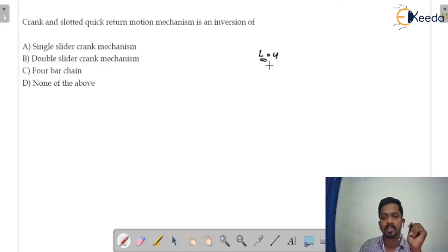In the single slider crank mechanism, one link is sliding pair and out of four there are three turning pairs. That is basically crank and slotted lever mechanism. That is basically the inversion of the single slider crank mechanism. So option A would be the correct answer and I am going to show you which link must be fixed.